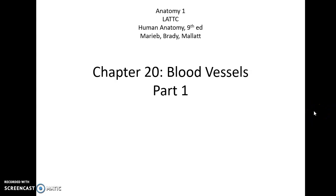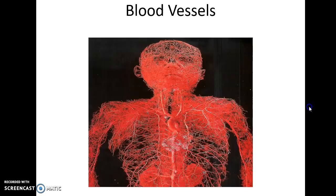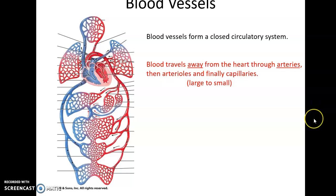This is Chapter 20, Blood Vessels, Part 1. Here's a view of a lot of the blood vessels in the human body. There are a ton of them because they go basically everywhere in our body. Blood vessels form a closed circulatory system, so the blood flows around and around, going throughout the body and also to the lungs for oxygenation.